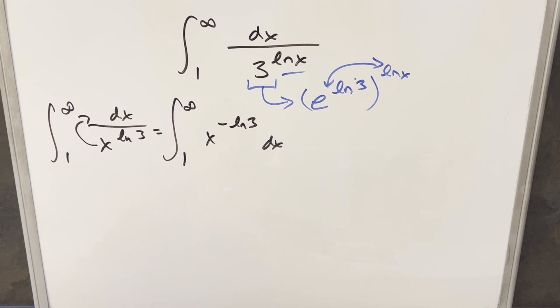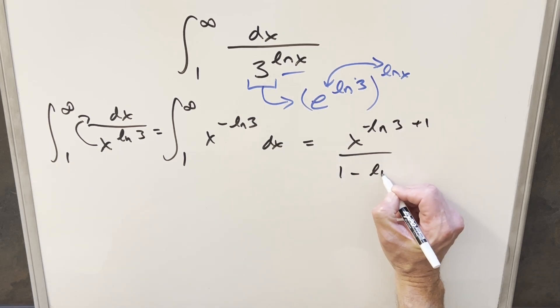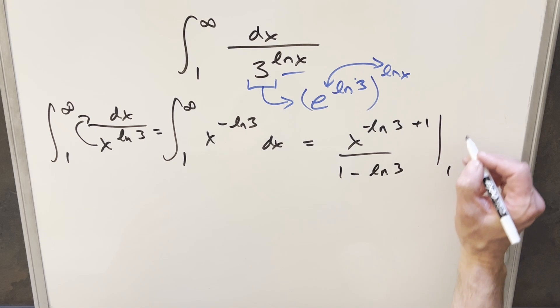But now again, with this just being a constant, we can just do power rule. So this is going to become x to the negative ln 3 plus 1 and then dividing by the same thing. I'll just reorder it, write this as 1 minus ln 3. We just need to evaluate this from 1 to infinity.